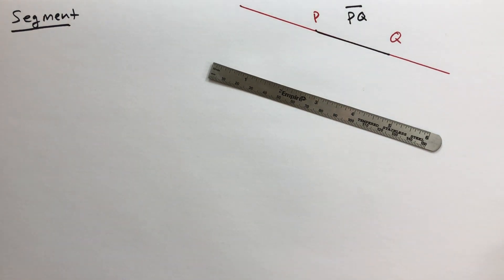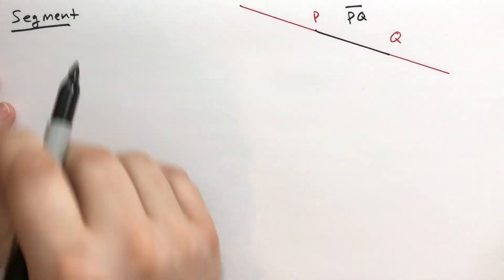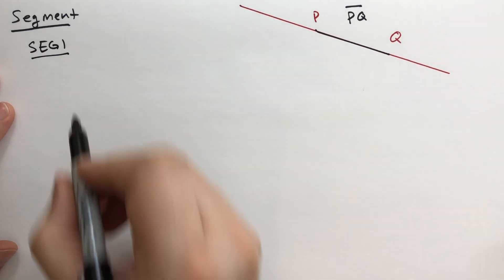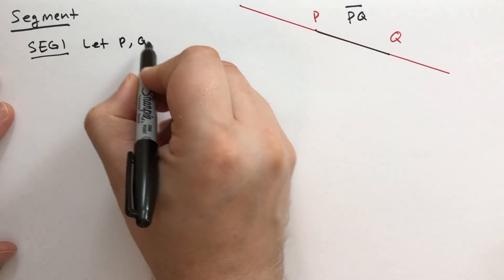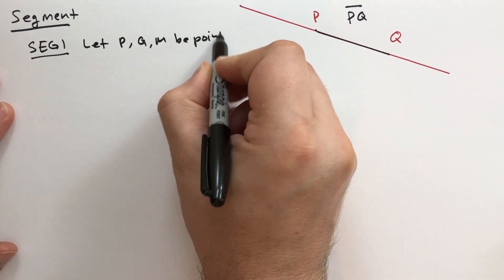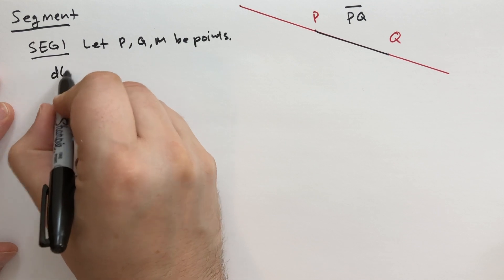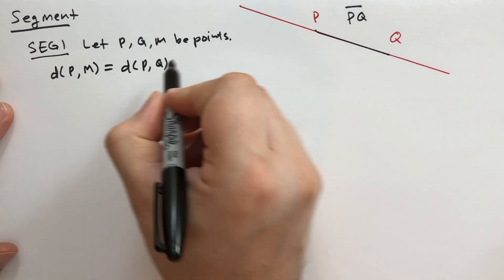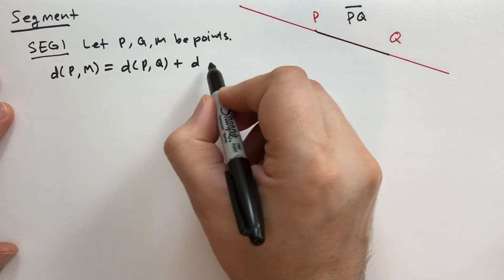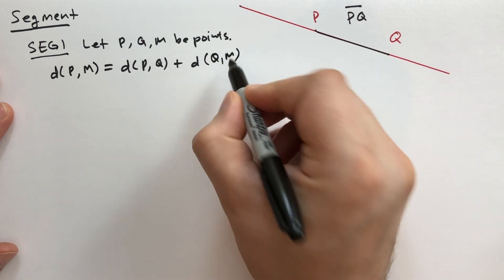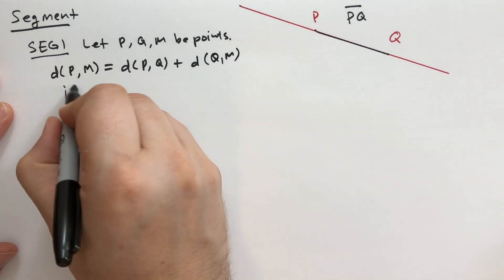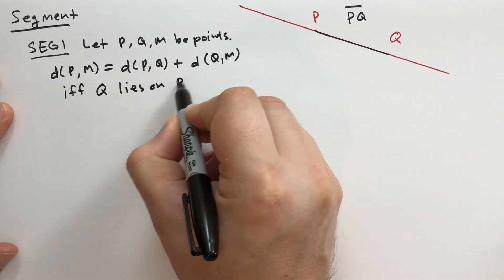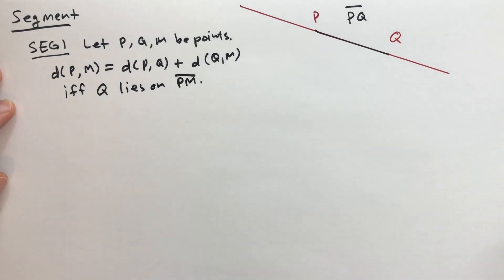There's a couple of facts, assumptions about segments we're going to assume here. The first one we're going to call seg1. It says let P, Q, and M be points. The distance from P to M is equal to the distance from P to Q and the sum of the distance between P to Q and from Q to M if and only if Q lies on the segment PM.